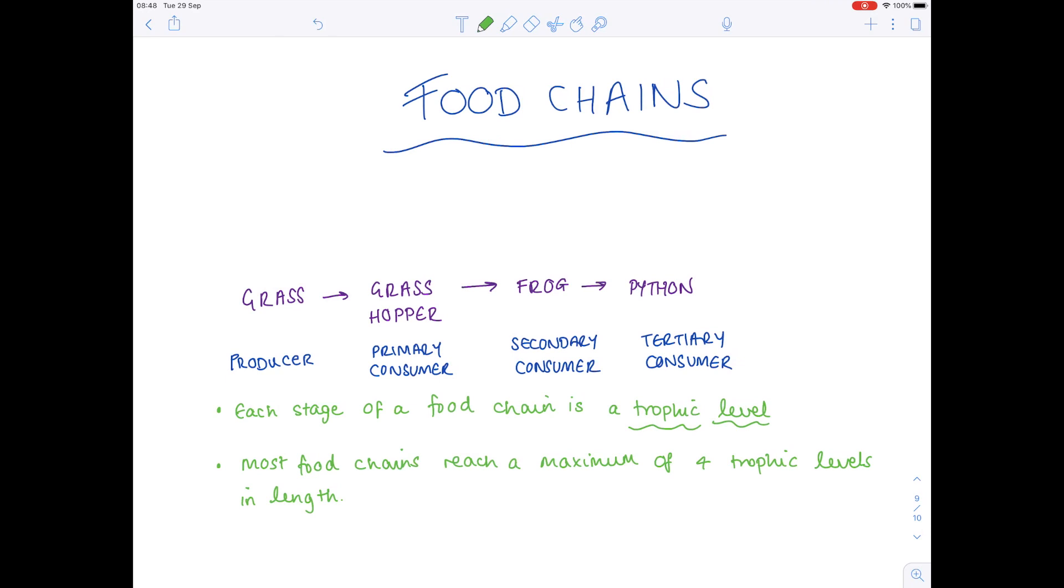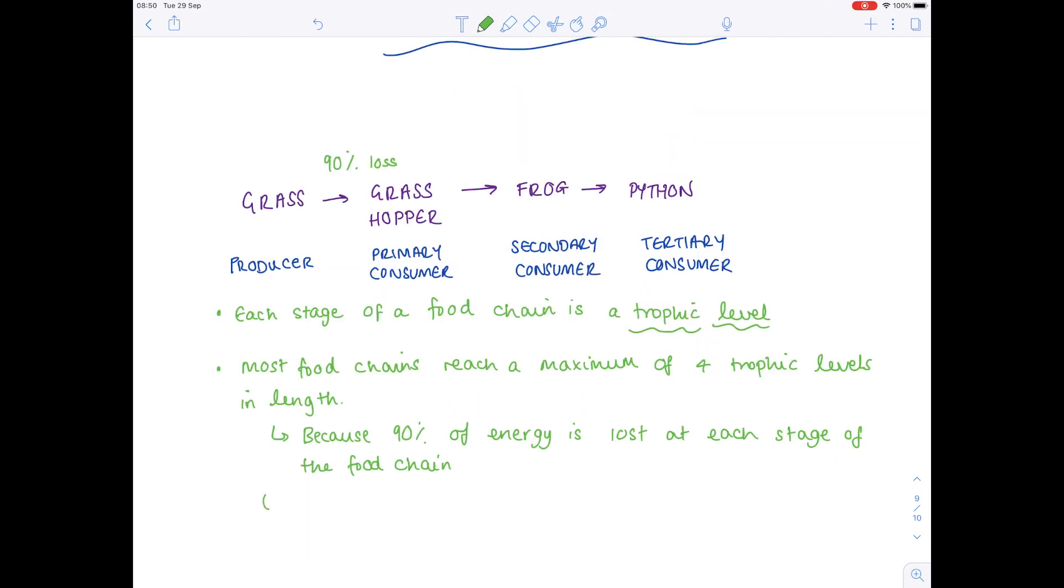Why is that? Why don't you end up with food chains with 10 organisms? Because 90% of energy is lost at each stage of the food chain, and there is not enough energy to sustain another level.